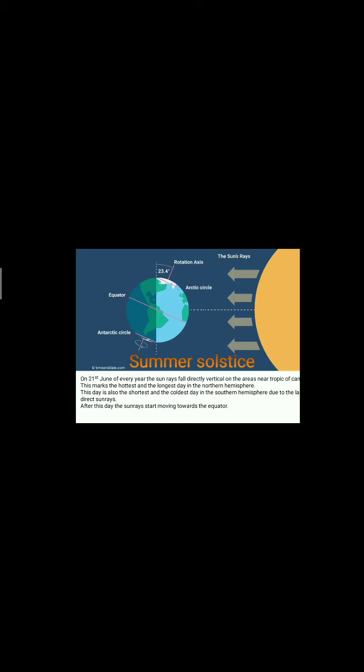So from summer solstice, when the sun's rays are falling directly on the Tropic of Cancer, that part receives direct sun rays, making it very hot — it is the summer season there. 21st June is also the hottest and longest day in the northern hemisphere. At that time, in the southern hemisphere, the sun's rays hardly reach, so it will be a very short and very cold day. So on that day, it is summer in the northern hemisphere and winter in the southern hemisphere.